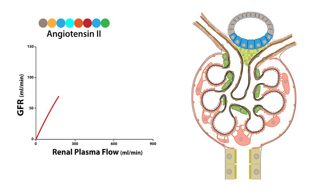Once angiotensin-2 is removed, afferent and efferent resistance return to normal, as does renal plasma flow and GFR.